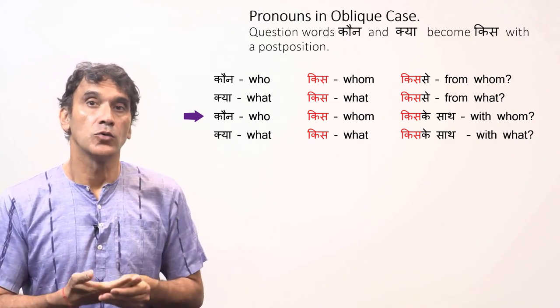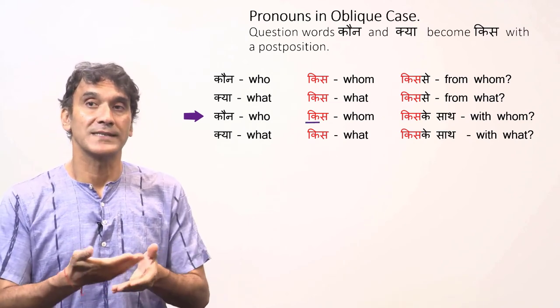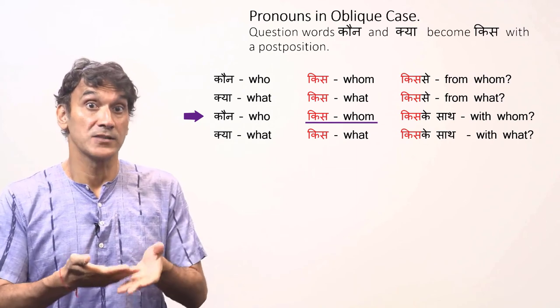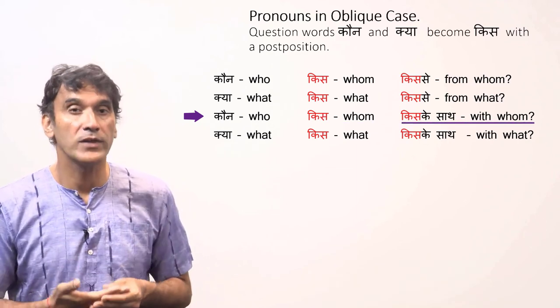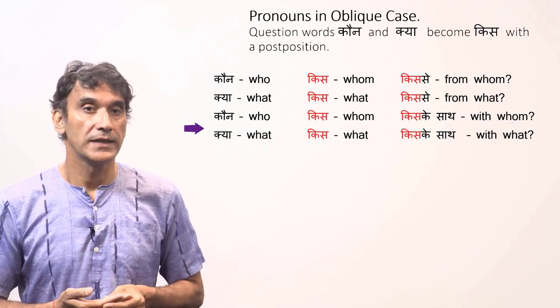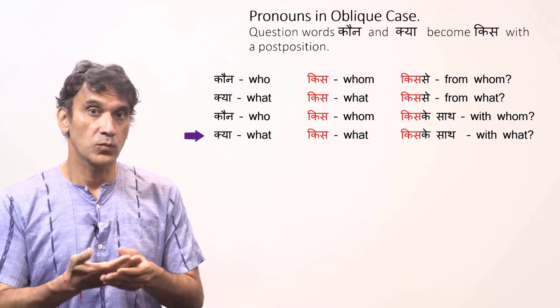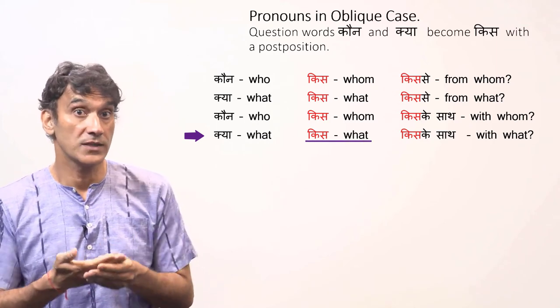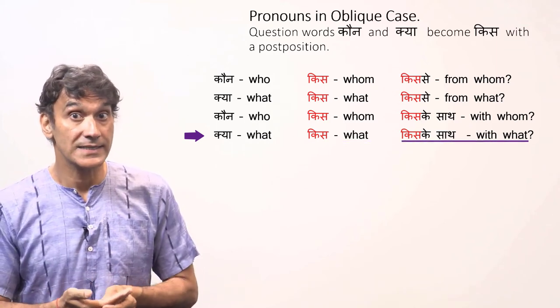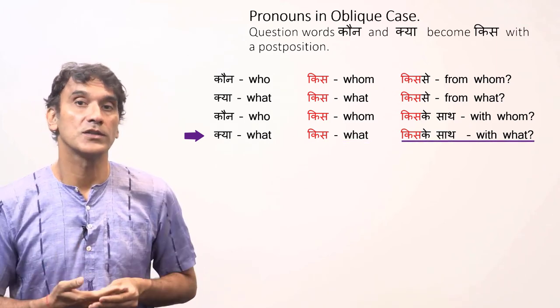'कौन' (who) has the oblique form 'किस', meaning 'whom' — 'किस के साथ' means 'with whom'. 'क्या' (what) also has the oblique form 'किस' — 'किस के साथ' means 'with what'.